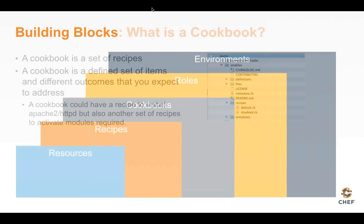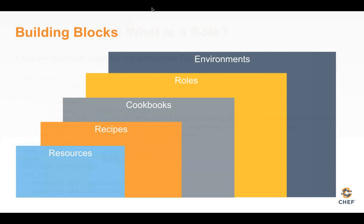Once you have a bunch of recipes, you put them all together into a cookbook. You may have a recipe that enables a service, one that disables a service, and recipes that enable certain modules. For example, the default Apache recipe might say install Apache, but another recipe says enable the mod_ssl module — these are actually different recipes but belong to the same cookbook. Roles are where you specify a list of recipes to run on a machine. The order you specify recipes in a role is critical — the first recipe you specify will run first.